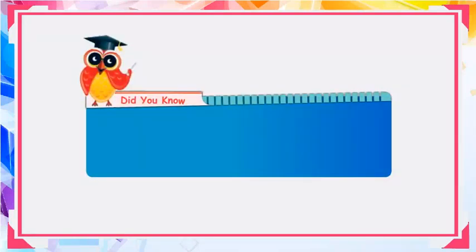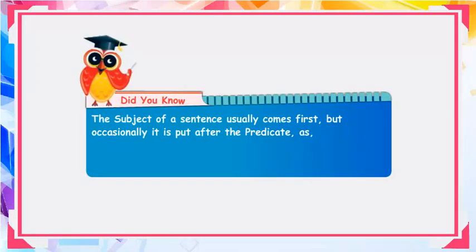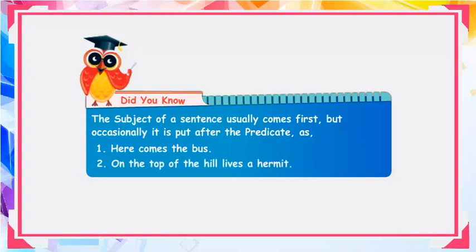Did you know? The subject of a sentence usually comes first, but occasionally it is put after the predicate. For example: 'Here comes the bus.' 'On the top of the hill lives a hermit.'